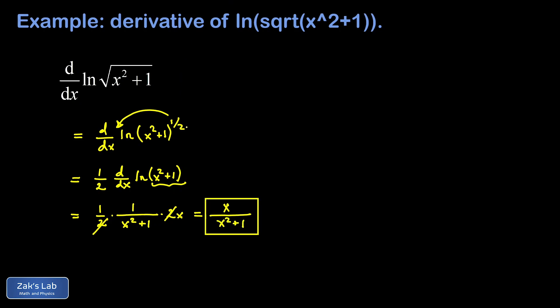Now, if you don't see that log property simplification, things are a little bit more difficult. If we're not going to bring that one half down in front of this expression, we're going to have to use the chain rule on a function of a function of a function.